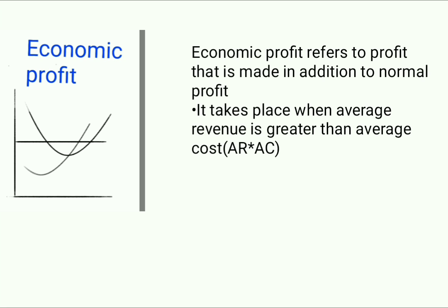Starting with economic profit: economic profit refers to the profit made in addition to the normal profit. It takes place when average revenue is greater than average cost. In the diagram, the curve line is the AC line, and the line that looks like a Nike tick is the MC, which is marginal cost. Economic profit occurs when average revenue is greater than average cost.